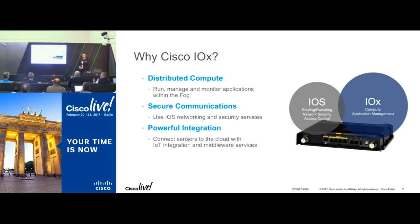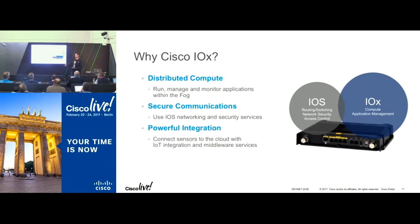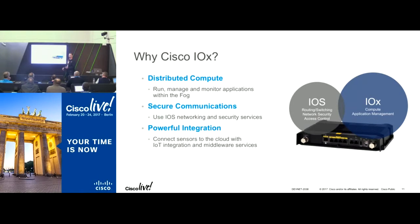Why would we use Cisco IOX? Cisco IOX allows us a distributed computing model in a familiar way with IOS. A lot of people are familiar with the IOS operating system that runs with switches and routers in Cisco. The accompaniment with that is IOX — you have a VM running directly on the hardware itself, getting its own CPU resources to process sensor data or any other kind of data coming into this gateway. This is your edge computing fog gateway, specifically the IR 829.